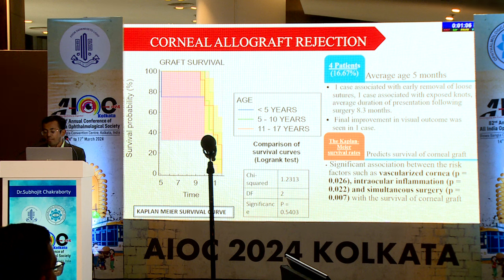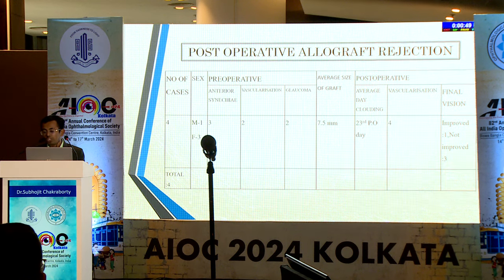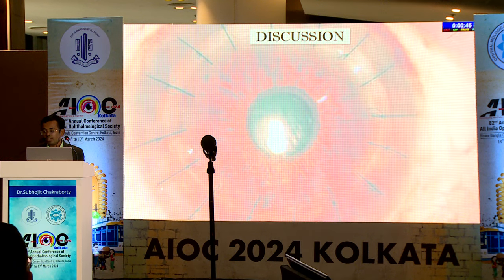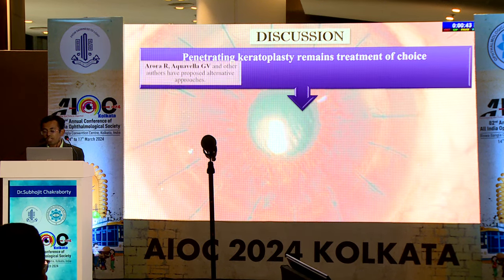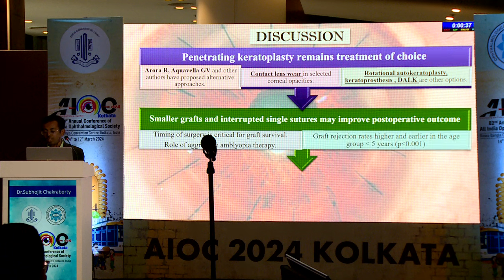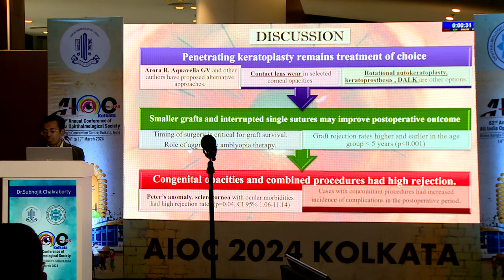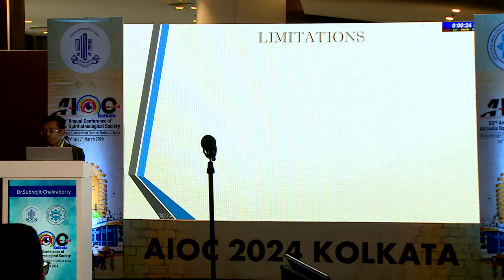A Kaplan-Meier survival curve was plotted to predict graft survival, which showed association of vascularised cornea, intraocular inflammation and simultaneous surgery with survival. Penetrating keratoplasty remains the treatment of choice in poor resource settings. Smaller grafts and interrupted single sutures may be beneficial. Graft rejection rates were higher and earlier in the age group under 5 years. Congenital corneal opacities and combined procedures had high rejection rates. Limitations arose from the retrospective nature of the analysis and small sample size.